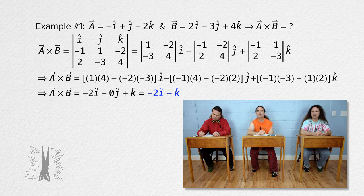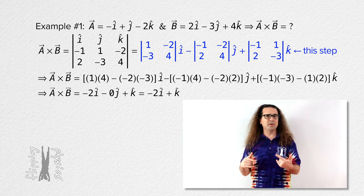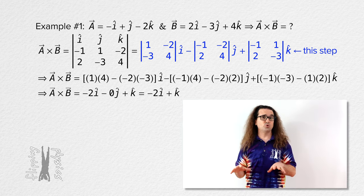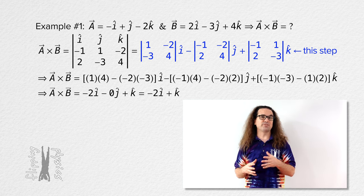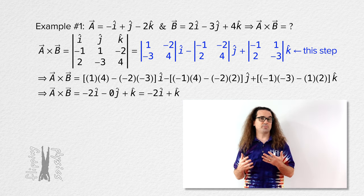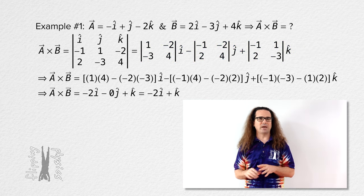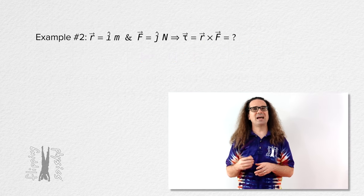Do we really need to do the step with all the 2 by 2 matrices? That step seems a bit excessive. Actually Bo, I agree. I do think it was useful to show the 2 by 2 determinant matrices step this time while reviewing how to use the cross product; however, in the future I do not think it is necessary to show that particular step. Okay, now let's do a simple cross product torque example to see how this works.